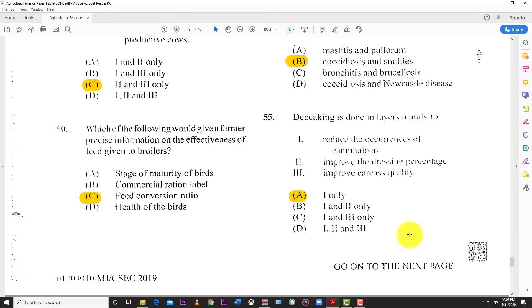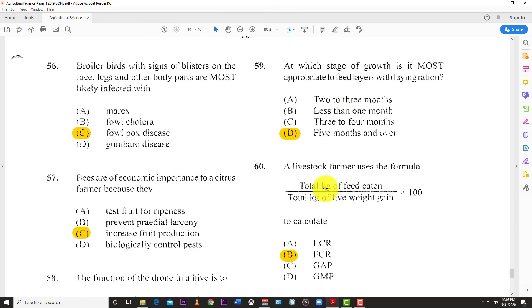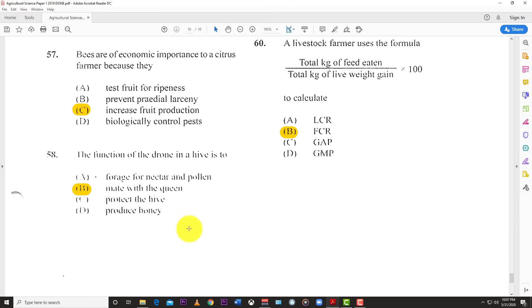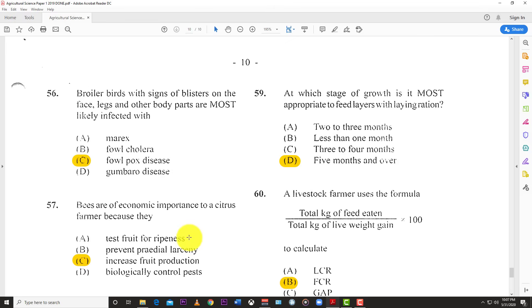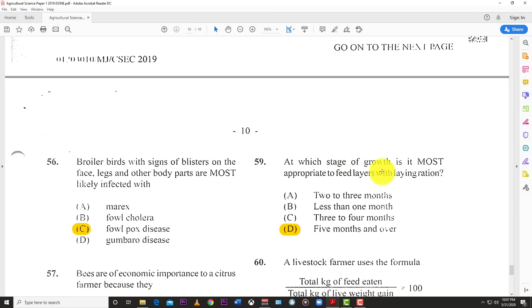Number 56: Broiler birds with signs of blisters on the face, legs, and other parts of the body are most likely infected with fowlpox disease. Number 57: Bees are of economic importance to farmers because they increase food production. You need pollination to occur so that flowers can develop into food. You need pollination for food development.